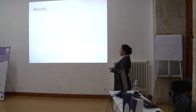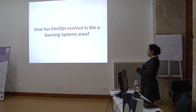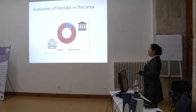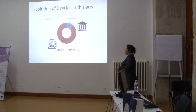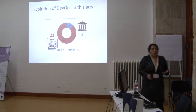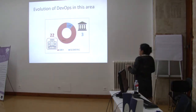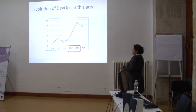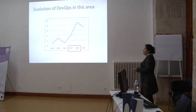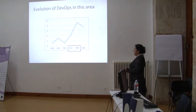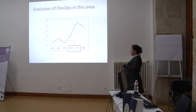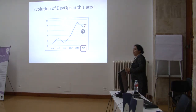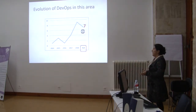Regarding the results, the first question is: how has DevOps evolved in the learning system area? As we can see in this figure, 12% of the primary studies come from the scientific literature, meaning the majority of studies come from the grey literature. From another point of view, this figure shows the distribution of primary studies by year. As we can see, in the last two years the interest is growing, but there are seven primary studies for which the year of publication is not available.